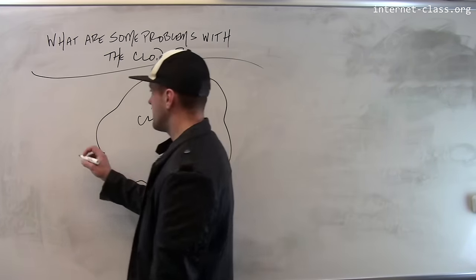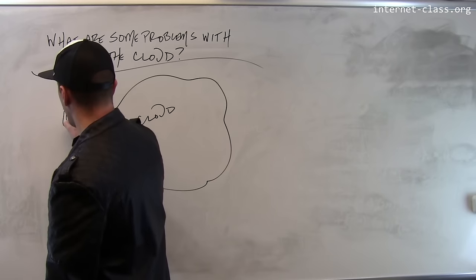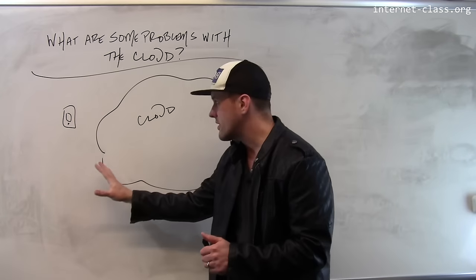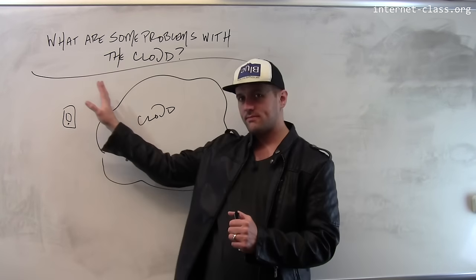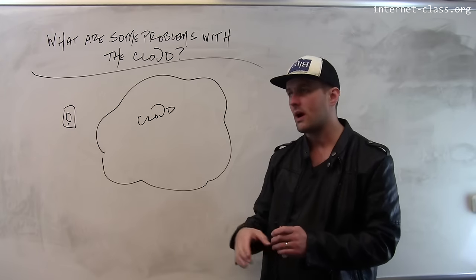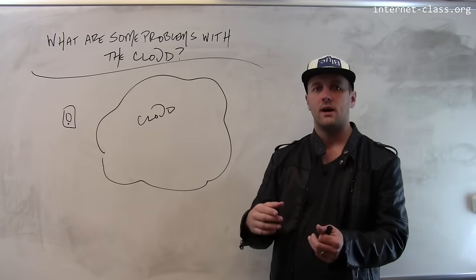People at the edge of the cloud are using their end-user devices like smartphones, and as the cloud gets more powerful, these edge devices can become less powerful because they're relying more and more on the cloud to do things for them.